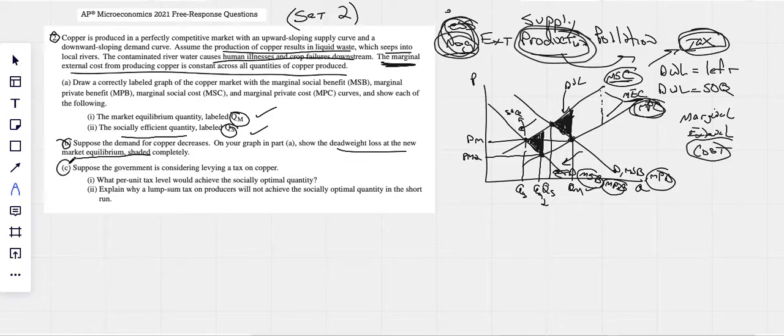All right. So, suppose the government is considering levying a tax on copper. What per-unit level tax would achieve the socially optimal quantity? Again, this goes back to knowing that that vertical distance is your marginal external cost. It is the tax that should be levied to reduce this. As we make the price go up, there's less of this good produced. Less people want it, less people produce it.